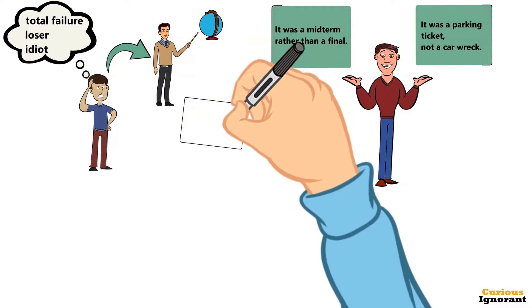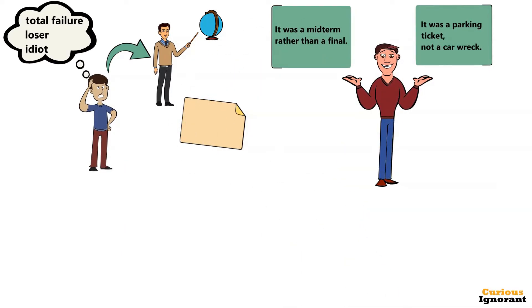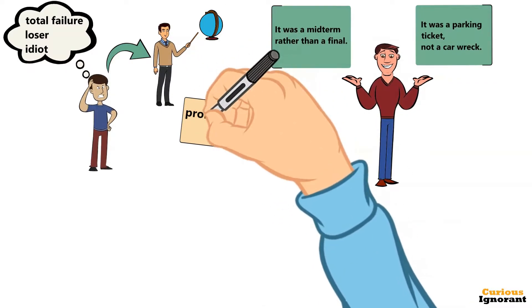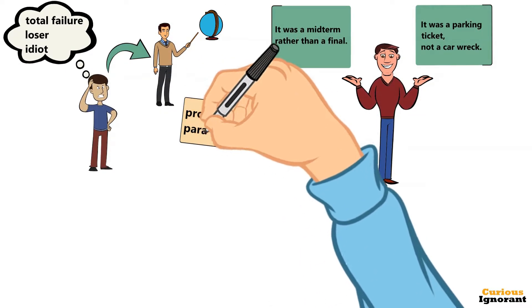As it's clear from the example, mindset defines how you deal with challenges and failures. In the fixed one, failure means a catastrophic event that could cause paralysis.